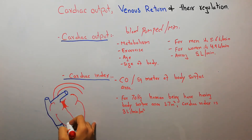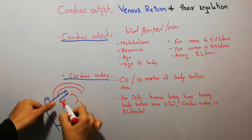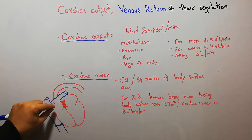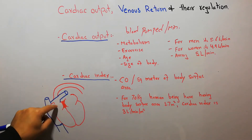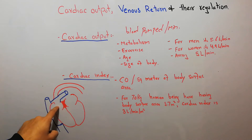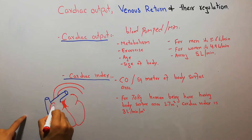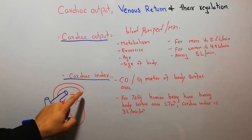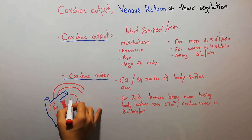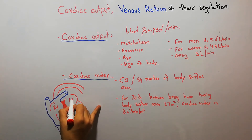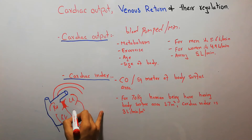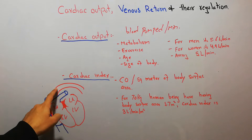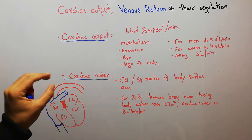Here we have the heart. Blood is coming through different channels into the heart — into the left atrium. Blood from the right atrium goes into the right ventricle, then from the right ventricle blood goes into the lungs, and from the lungs the blood comes into the left atrium. The left ventricle then pumps blood into the aorta, which is the largest blood vessel.